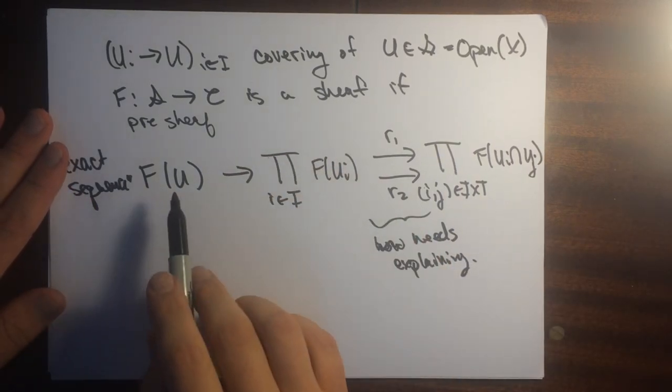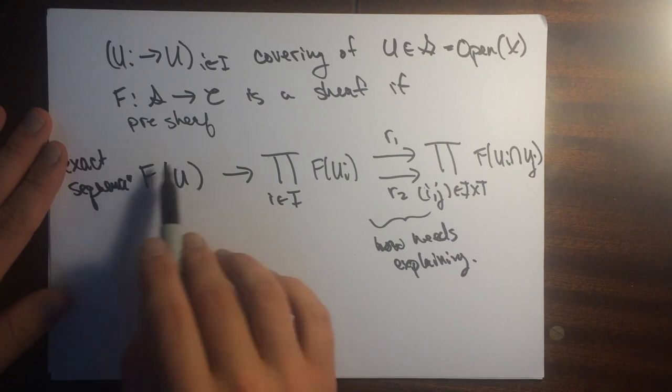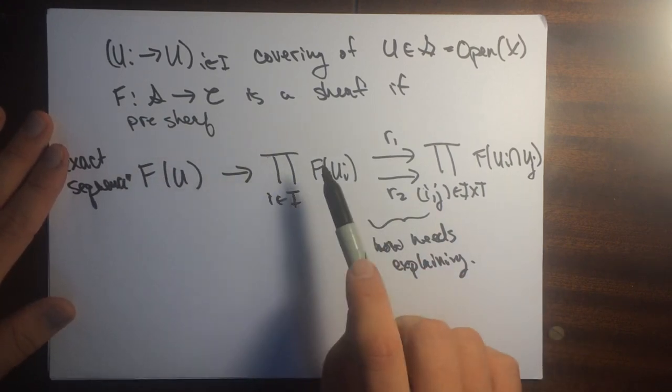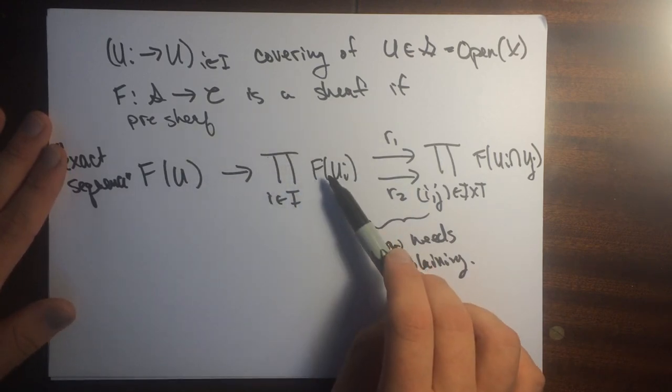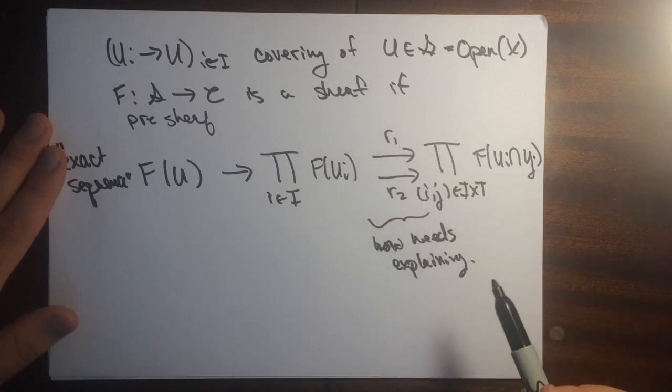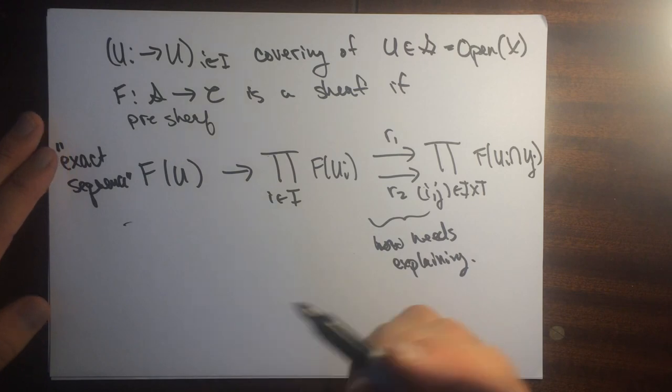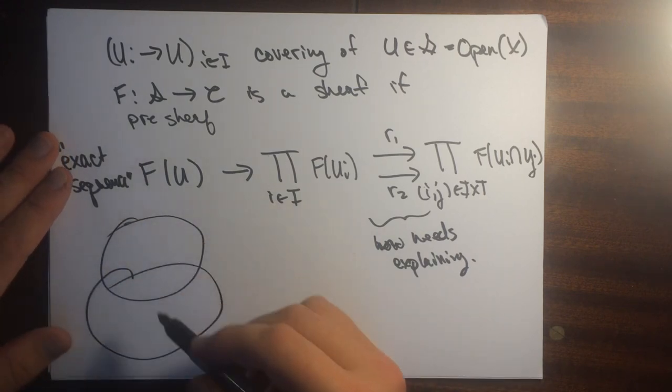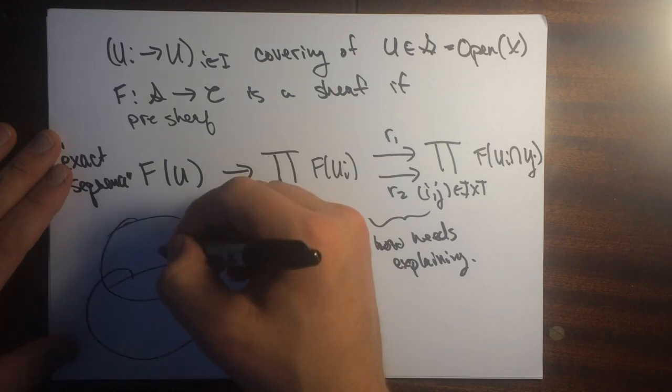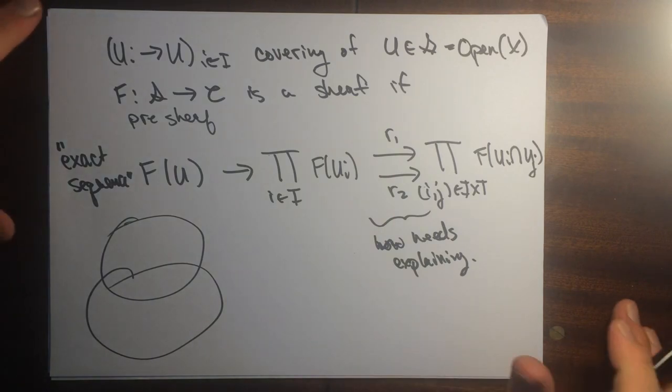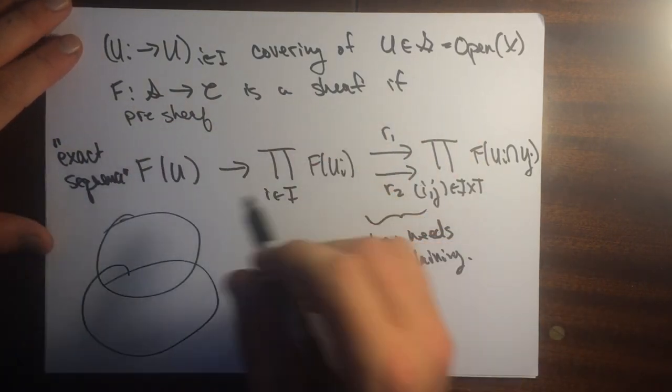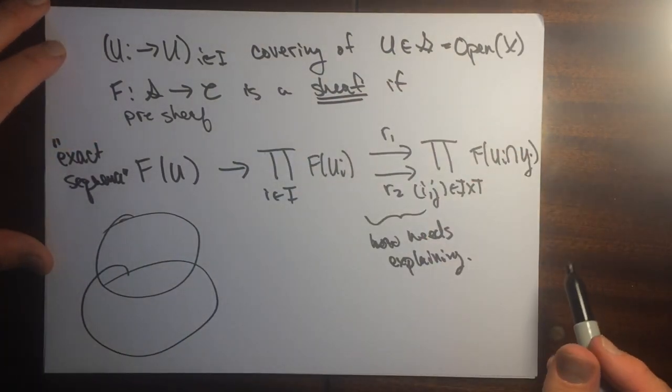But the idea is that an element, a global section, or an element of F of U, will be determined by a collection of elements here in each of the open sets covering U, provided that the restrictions to the other open sets are the same. The idea is that you have two sets, something defined here and something defined here. And when they agree on the intersection, you get something defined on the whole thing. These types of sequences are encoded by equalizer and co-equalizer diagrams in category theory. This whole thing is talking about what a sheaf is.